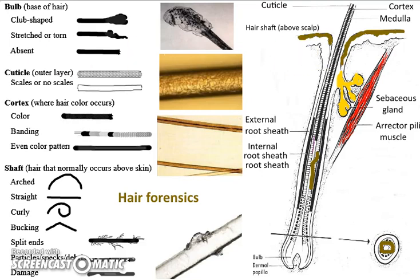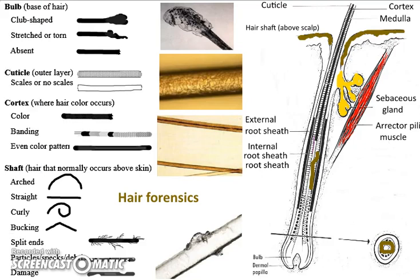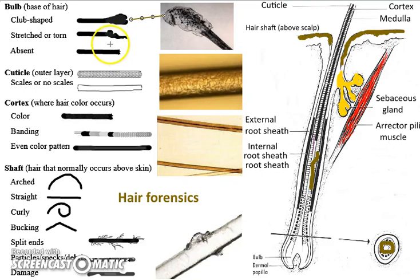Now let's take a look at some of the ways we categorize hair. What you're seeing on this chart is just the beginning. Here we see the entire bulb is club-shaped, and so that suggests that the hair was ripped out, maybe a violent movement. If it's stretched or torn also, it could be violent. And sometimes it's cut — if it's cut at an angle, we think maybe that's a razor blade and they were shaving.